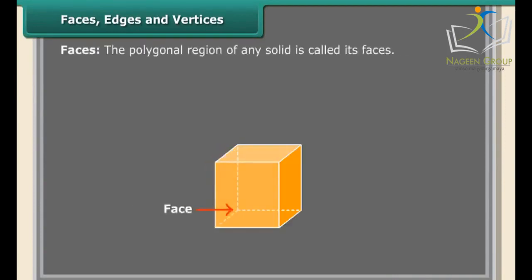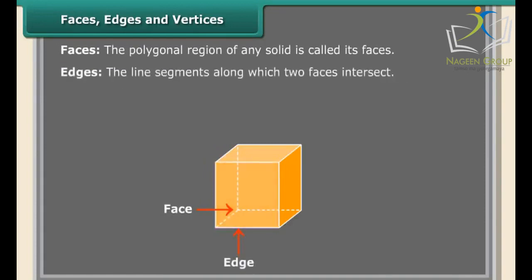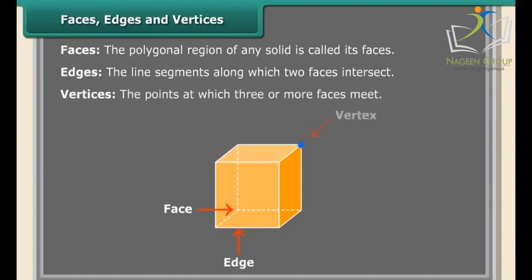Faces: the polygonal region of any solid is called its faces. Edges: the line segments along which two faces intersect. Vertices: the points at which three or more faces meet.